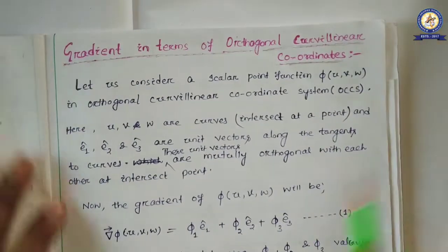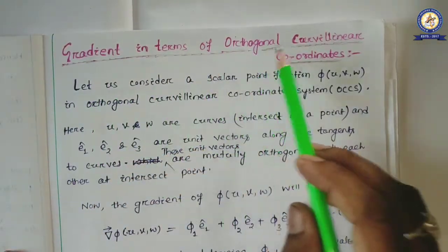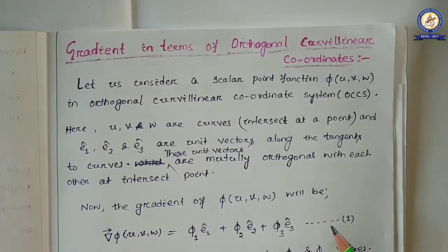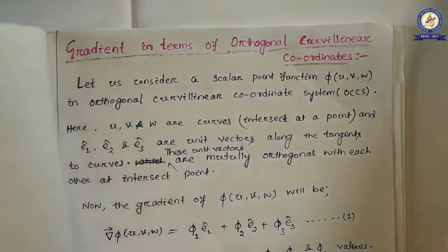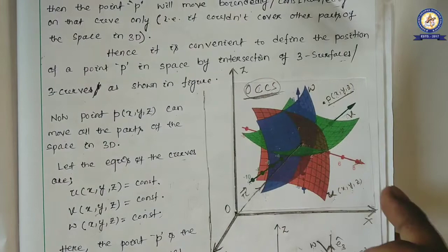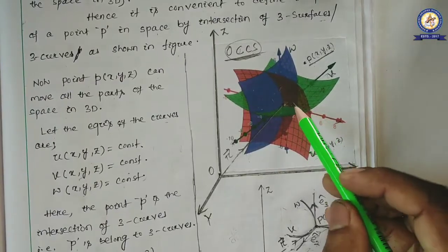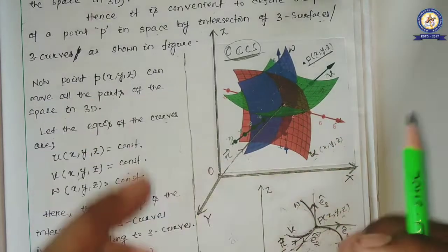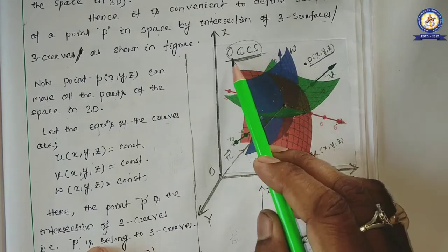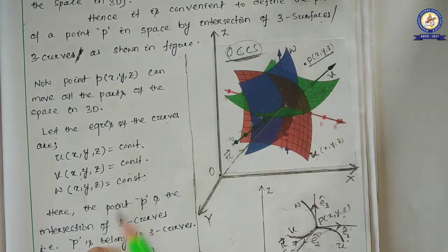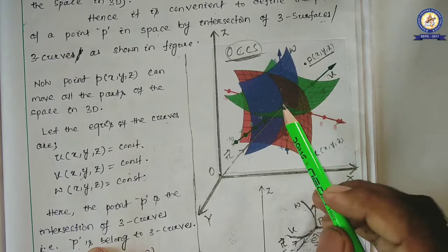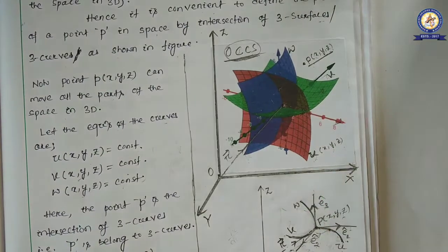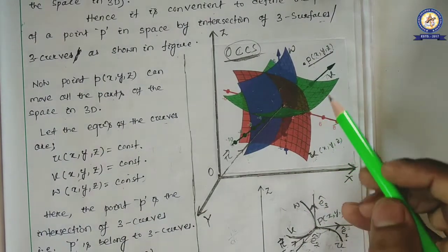In this class we are going to discuss gradient in terms of orthogonal curvilinear coordinates. As we discussed previously, this space where both curvilinear coordinates and Cartesian coordinates are coupled with each other is called the OCC or orthogonal curvilinear coordinate system, where at least three surfaces intersect with each other to define the entire 3D space.